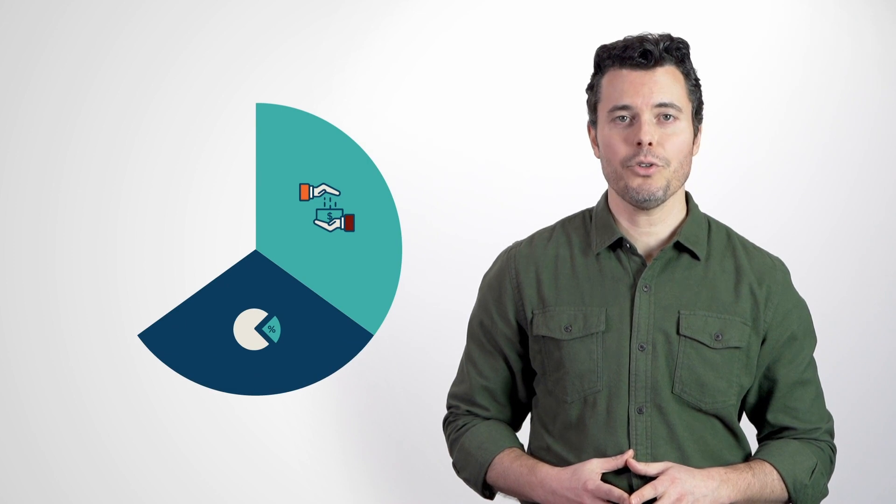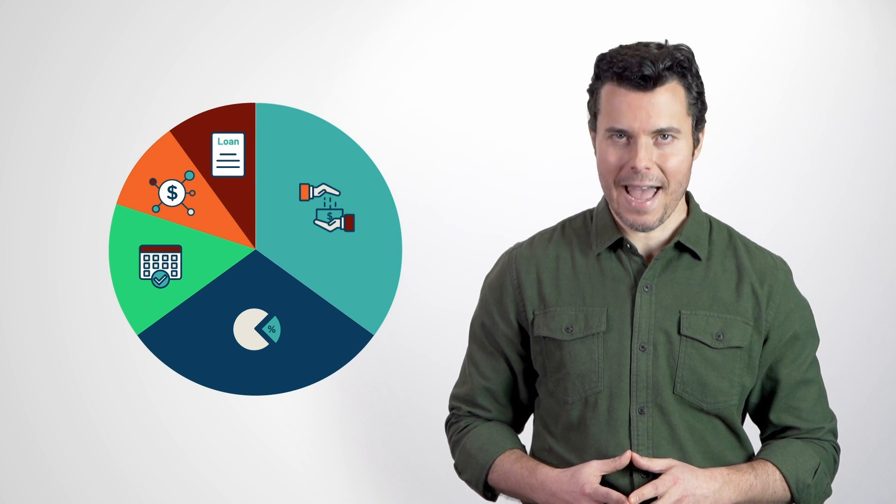Your credit score is based on five important factors: your payment history, your credit utilization, your credit history, your credit mix, and how much new credit you have.